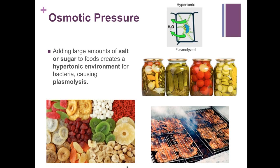Osmotic pressure involves adding large amounts of salt or sugar to foods to create a hypertonic environment for bacteria, causing plasmolysis — water leaves the cell causing it to shrink. Methods include pickling, smoking foods, or drying foods like dried cranberries, bananas, and pineapple. These preservation techniques have been used for centuries, although osmotic pressure is never a sterilizing technique.